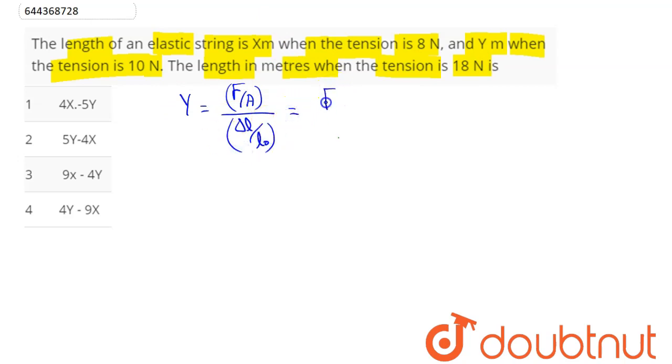This simplifies as F into L0 divided by A into delta L. Here since same string is there, Young modulus, original length and area remains to be same. So force will be proportional to delta L. By changing the force, length of the string changes. So F is proportional to delta L.